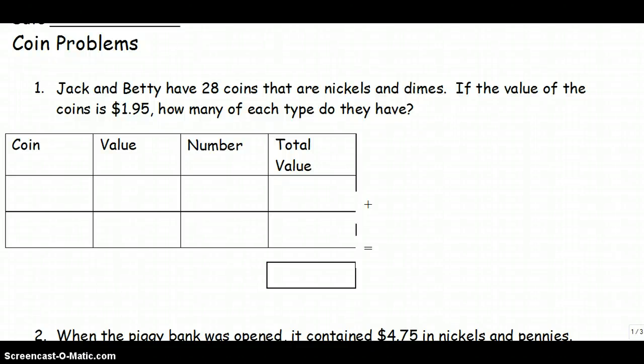Okay, let's look at some of the coin problems. Jack and Betty have 28 coins that are nickels and dimes. If the value of the coins is $1.95, how many of each type do they have?